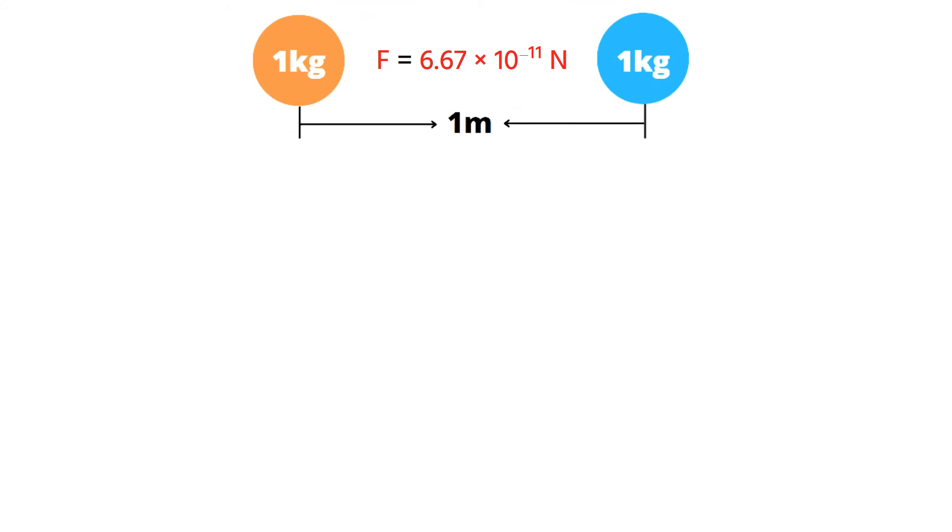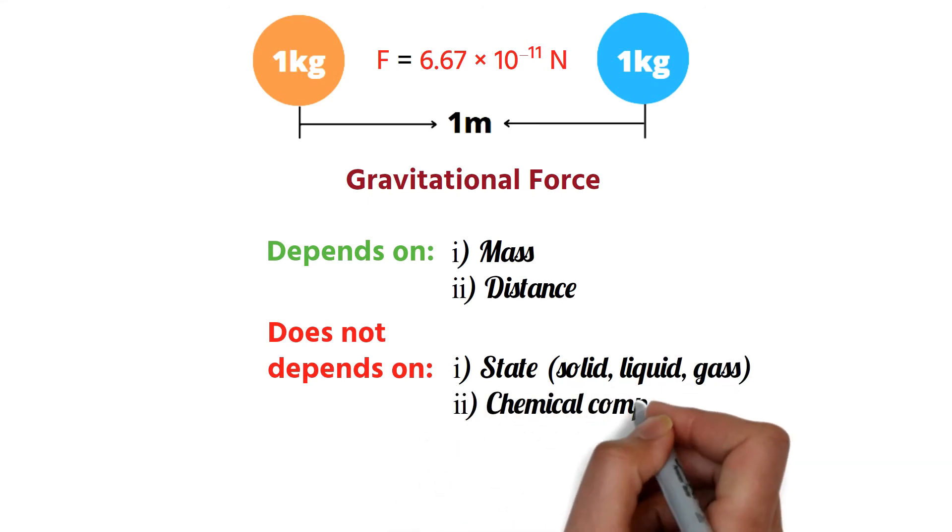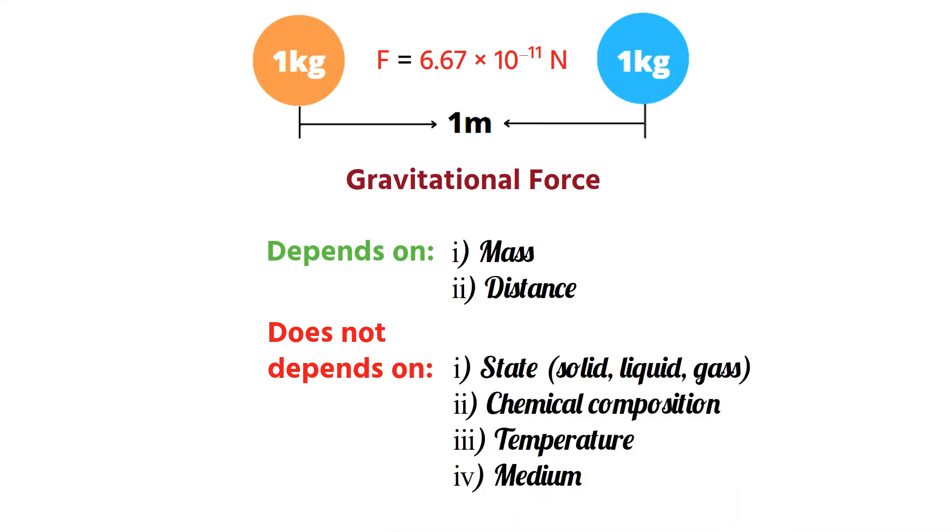According to Newton's law of gravitation, the force of attraction between two objects depends only on their masses and their distance. This force of attraction does not depend on the state of the objects, chemical composition, temperature, the medium between them, etc.